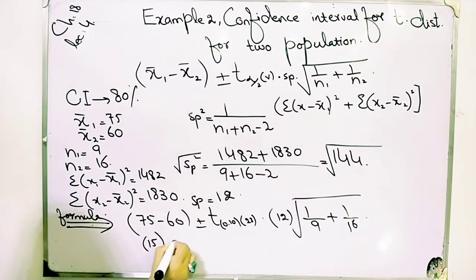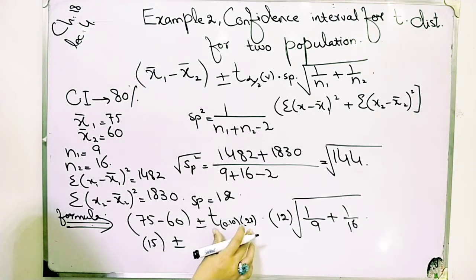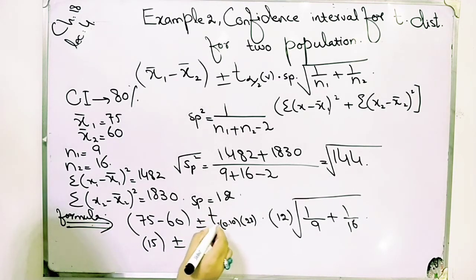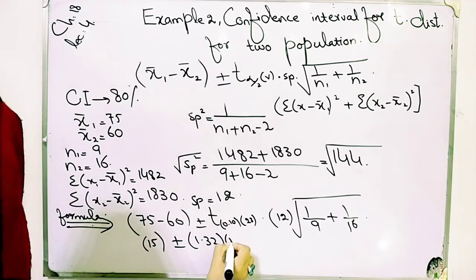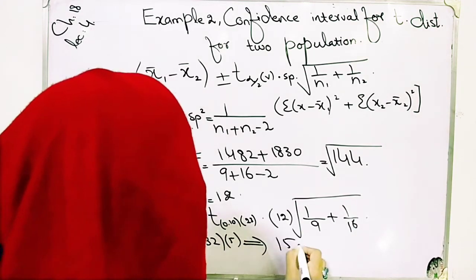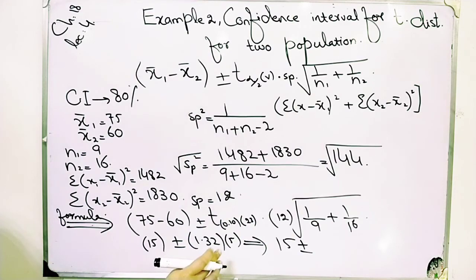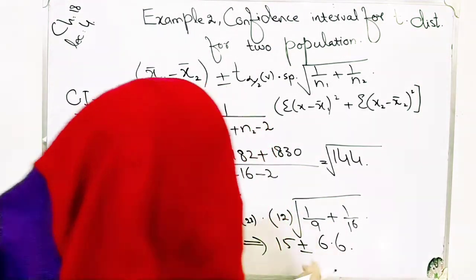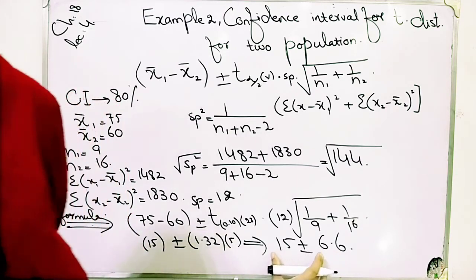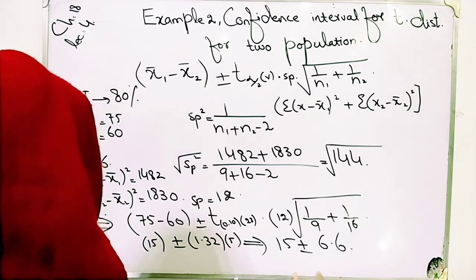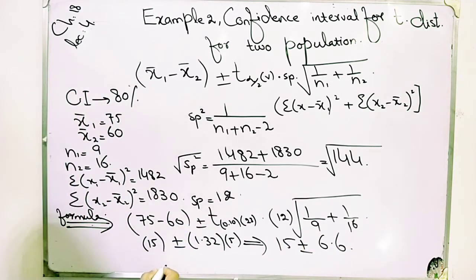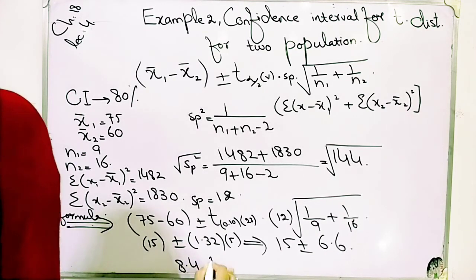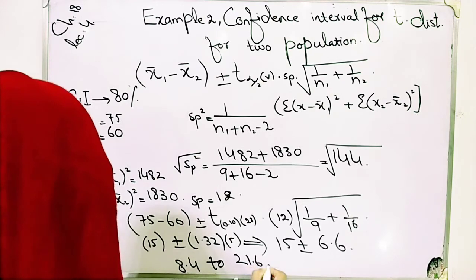We get 15, plus or minus. I will build a video explaining how to find t-table values. The t-value is 1.32. When you multiply 1.32 and 5, you get 6.6. So we have 15 plus or minus 6.6, giving confidence intervals of 8.4 and 21.6.